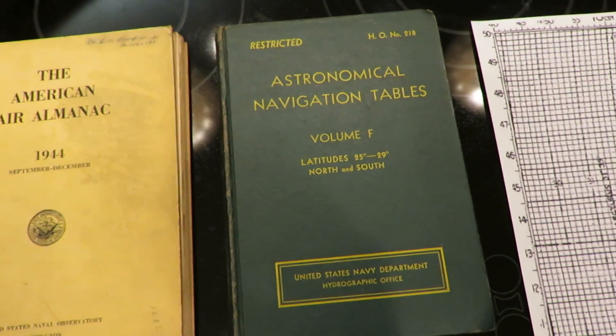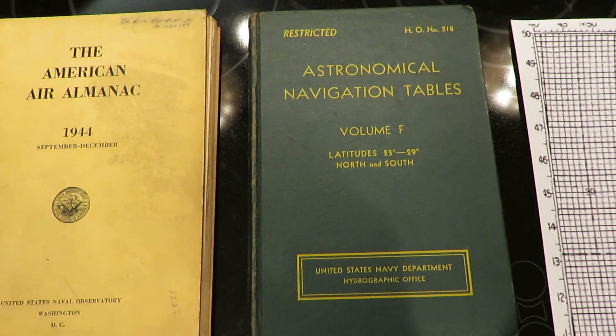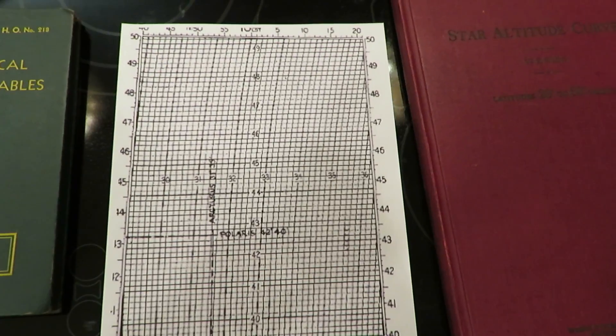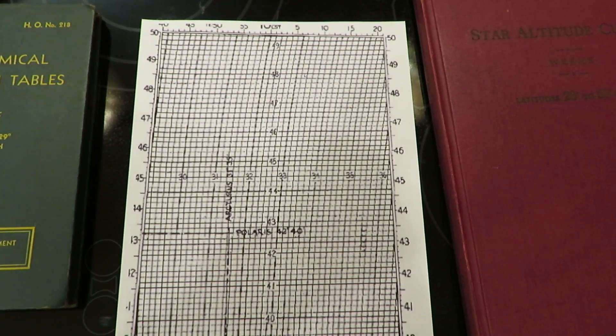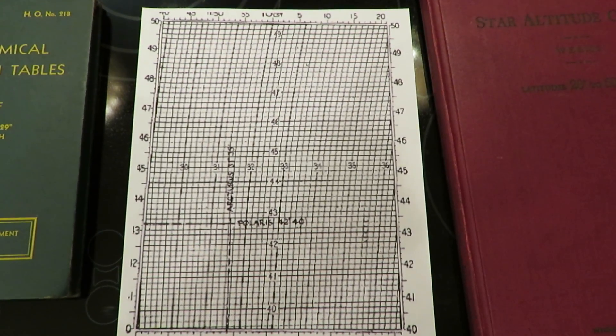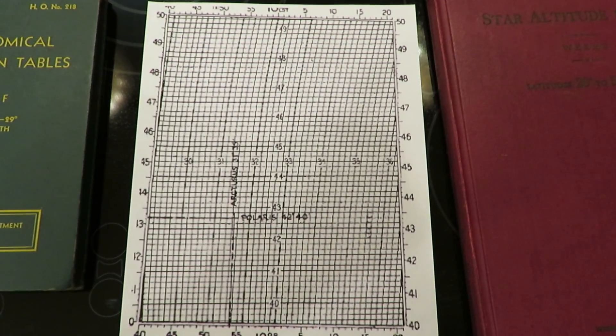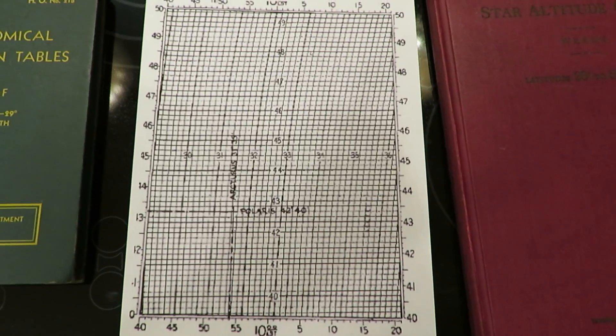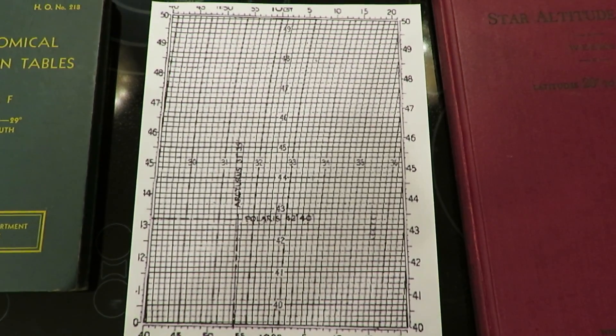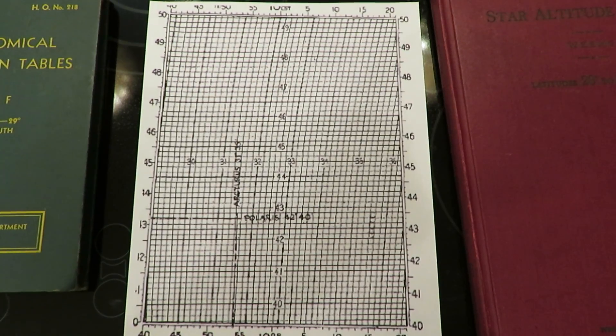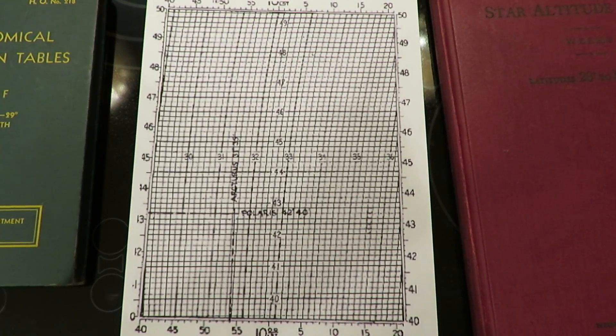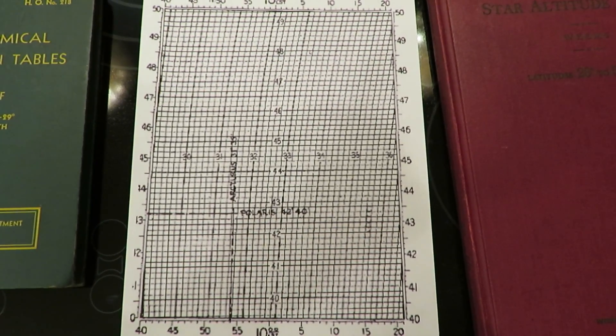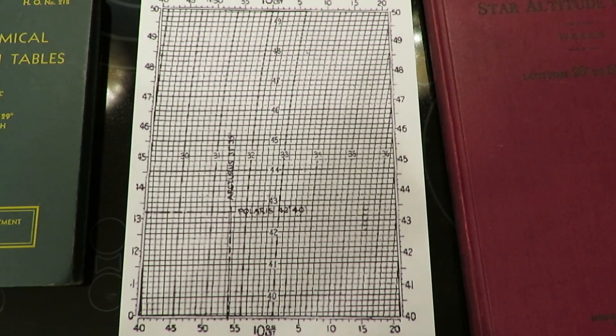Weems is also the inventor of the Weems plotter, which is still used today. This is an early example of one of his star altitude curves. Star altitude curves use sidereal time. We typically measure solar time using Greenwich mean time as the standard. Time can also be measured by the stars, and this is called sidereal time. A sidereal year is about one day longer than a solar year, and there are equations that can convert Greenwich mean time to Greenwich sidereal time. Right now, as I'm speaking, Greenwich sidereal time is about 30 minutes later than Greenwich mean time.